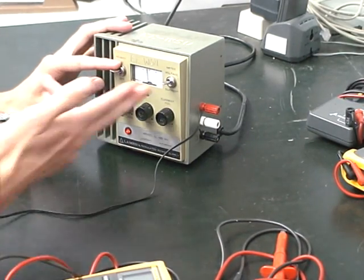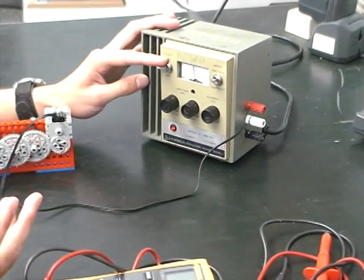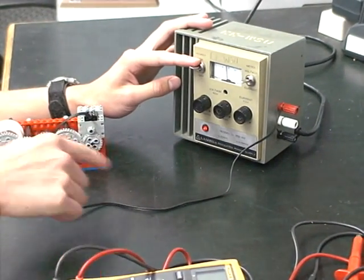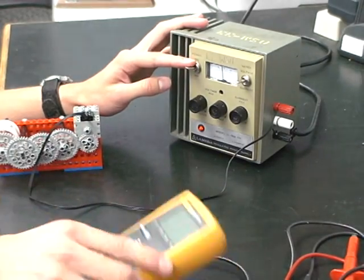And so now that we have this DC power supply connected to the motor, we want to measure the voltage and current of the circuit. So to do that we'll be using a multimeter.